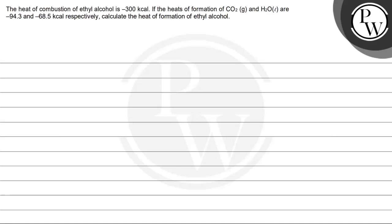Let's read this question: The heat of combustion of ethyl alcohol is -300 kilocalories. If the heats of formation of CO2(g) and H2O(l) are -94.3 and -68.5 kilocalories respectively, calculate the heat of formation of ethyl alcohol.